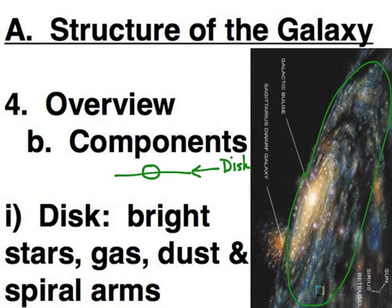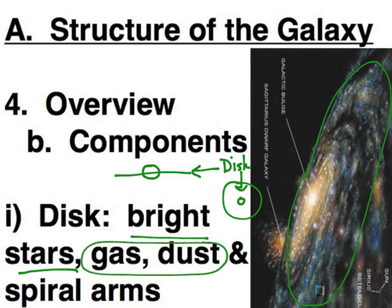If you looked at it face-on from above, then it's the round part. What you find in the disk of the galaxy—certainly bright stars—and that has to do with star formation. Star formation primarily occurs within the disk. Lots of gas and dust. That's part of what obscures our view, but it's also what's used to make the stars. This is the part of the galaxy where you find spiral arms.